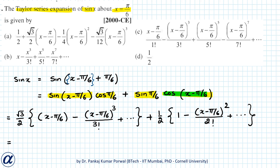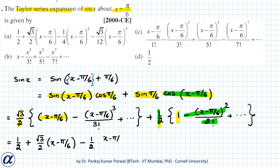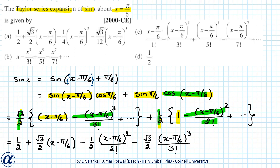Arranging in increasing powers of (x minus pi by 6): the first term is 1 by 2 times 1, that is 1 by 2. The next term is root 3 by 2 times (x minus pi by 6). Then minus 1 by 2 times (x minus pi by 6) squared over 2 factorial. Then minus root 3 by 2 times (x minus pi by 6) cubed over 3 factorial, plus dot dot dot. So our answer is correct.